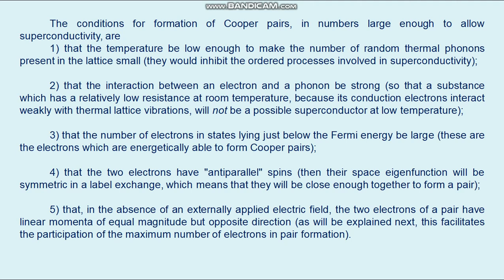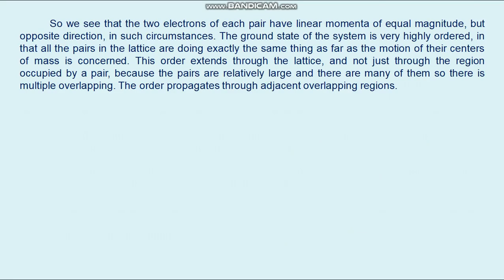Fifth, in the absence of an externally applied electric field, the two electrons in a pair have linear momenta of equal magnitude but opposite direction. The ground state of the system is highly ordered in that all the pairs in the lattice are doing exactly the same thing as far as the motion of the center of mass is concerned. This order extends throughout the lattice and not just through the region occupied by a single pair, because the pairs are relatively large and numerous, so there is multiple overlapping.